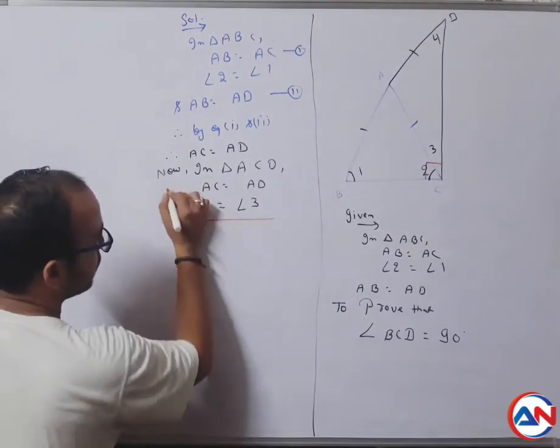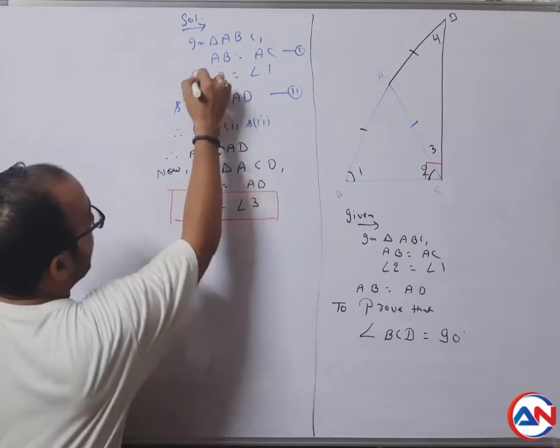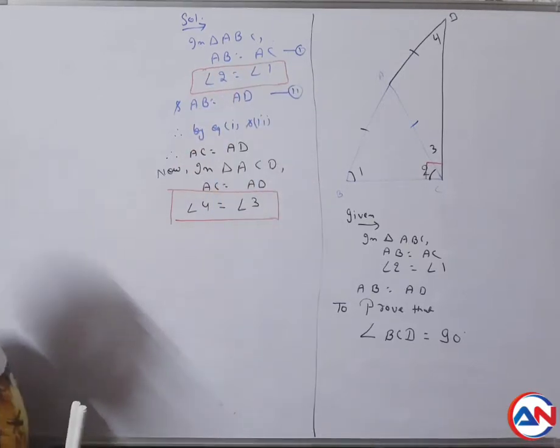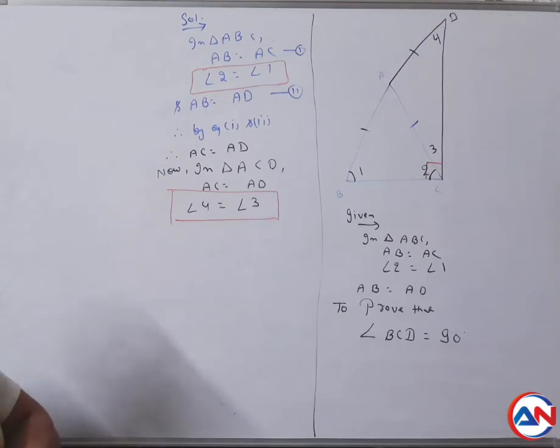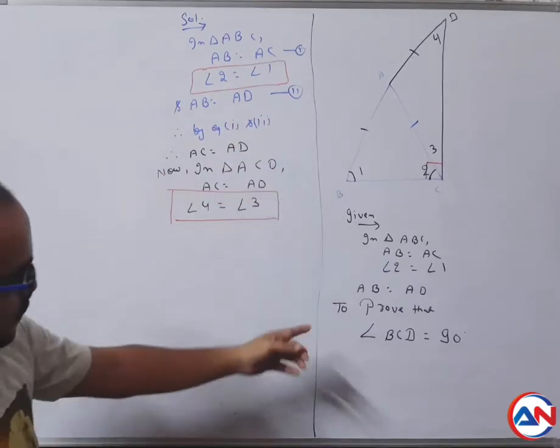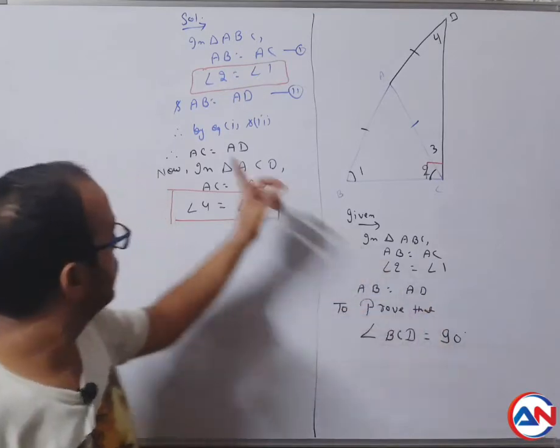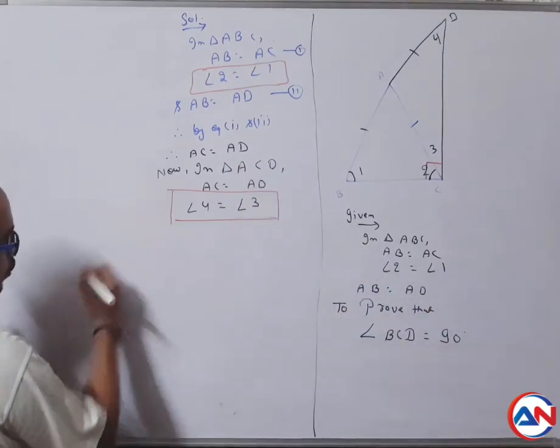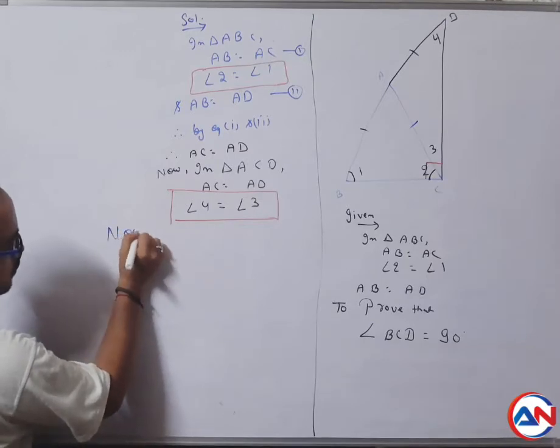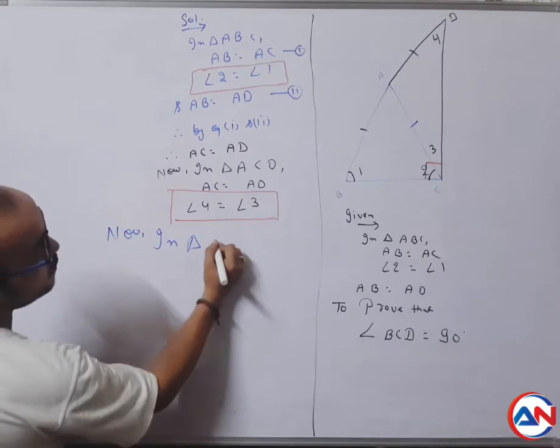Anyone have doubt understanding this? Now write in place of angle one, AB is equal to AD.